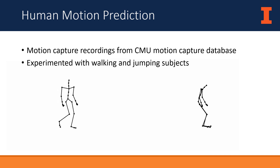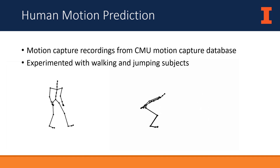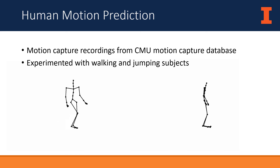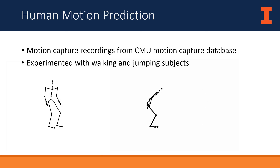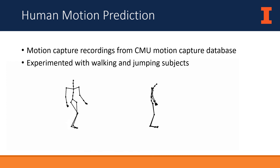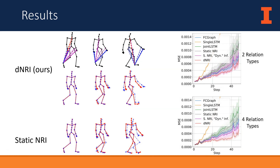The second dataset consists of motion capture recordings from the CMU motion capture database, using two subjects. The first contains walking trials; the second consists of trials where the subject stands stationary for a time and then jumps forward. For the walking subject, DNRI predicts many frames into the future without straying far from the ground truth skeleton, while static NRI makes significant errors. Visualized relations from DNRI show that different relation types are active when the heel is picked up, moved forward, and put back down.